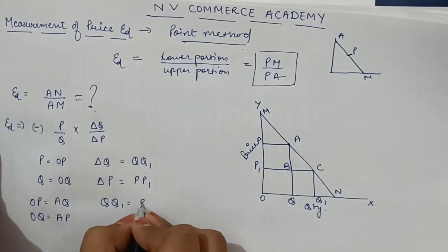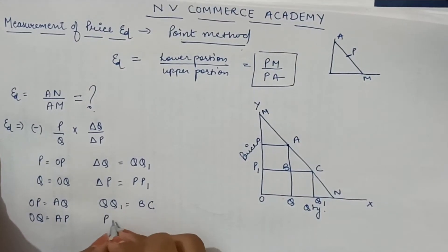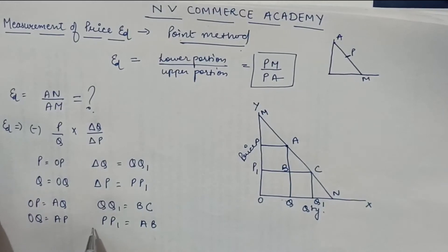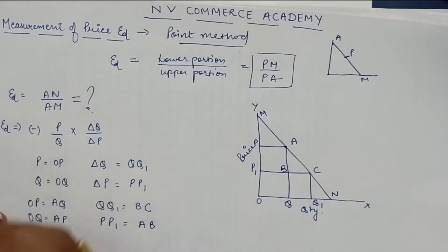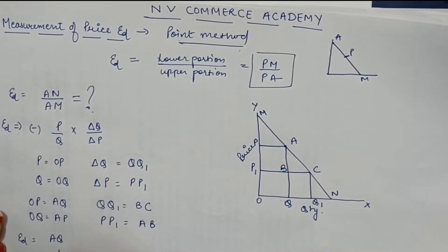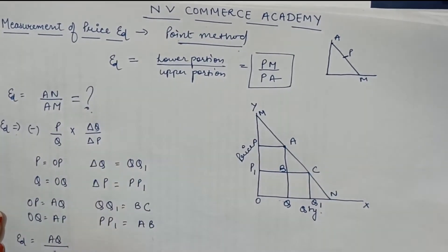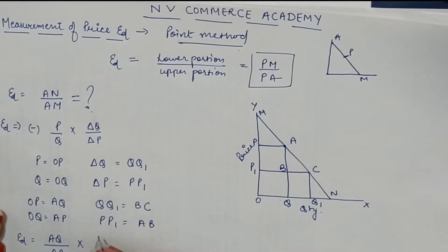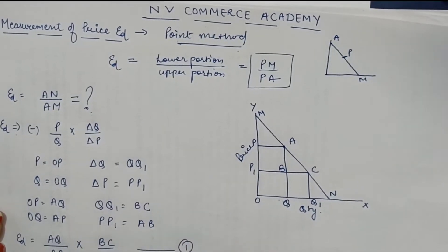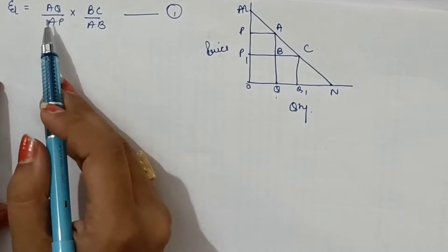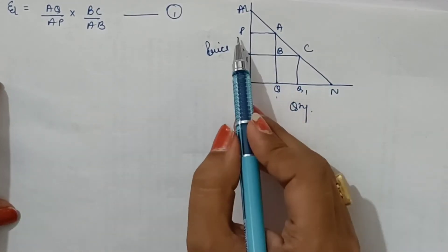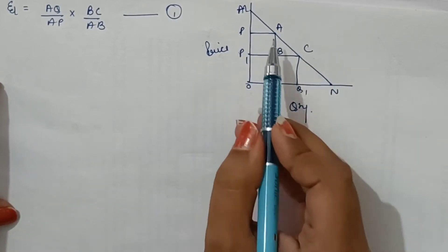So, substituting these values into the elasticity of demand formula, we get: E_D = (AQ/AP) × (BC/AB). That gives us equation number 1. By equation number 1, elasticity of demand is AQ/AP multiplied by BC/AB. Now, if we look at triangle ABC and triangle AQN, both are similar triangles. And if they are similar triangles, the ratio of their sides would be the same. So BC/AB equals QN/AQ — this is equation number 2.